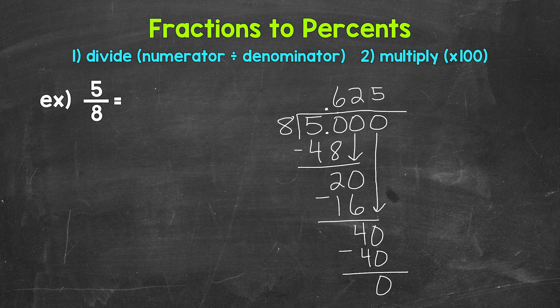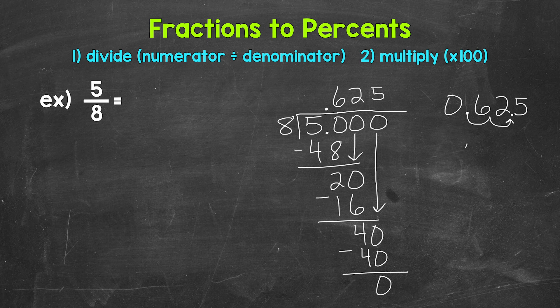Now we need to convert this decimal to a percent by multiplying it by 100. We can do this by moving the decimal twice to the right. Let's rewrite our decimal and move the decimal once, twice to the right. This gives us 62.5 percent. So 5 eighths equals 62.5 percent.